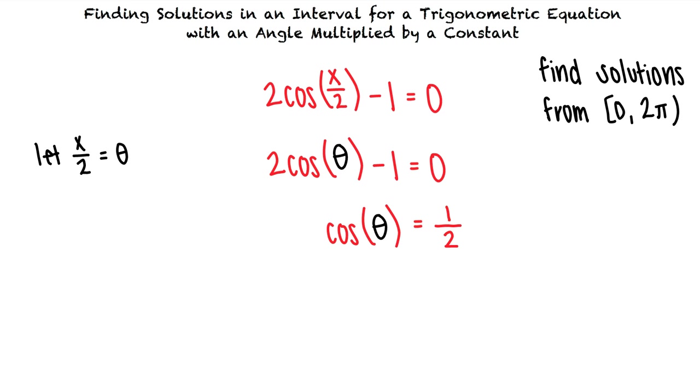The value 1 half is one of the common trigonometric values for cosine so we know that in the interval 0 to 2π if theta equals π thirds or 5π thirds cosine theta equals 1 half.